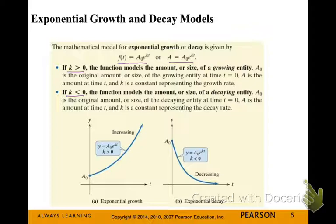Looking at the graphs, on the left, reading left to right, that's an increasing or exponential growth situation. The graph on the right, as you read it left to right, your values fall — that's a decay, a decreasing situation.